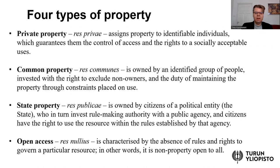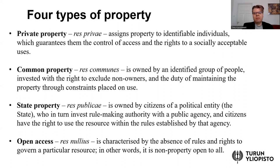If we clarify the different types of property from a legal perspective, it's good to distinguish what other types of property there can be besides private property. We can use four different types of property rights. First, if you think about private property — in Latin, res privae — then property is assigned to some clearly identifiable individuals who have control of access and rights to a socially acceptable use of this property. Think about, for example, some apartment in an apartment building.